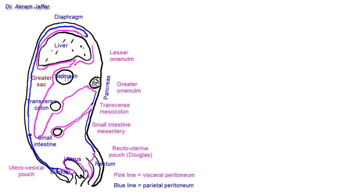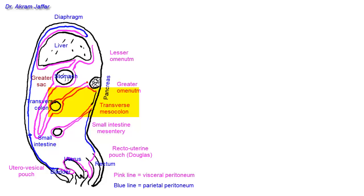The visceral peritoneum covering the liver is reflected onto the lesser curvature of the stomach, creating a double fold with the fold already drawn — this is the lesser omentum. Then on the back of the stomach, returning into the greater curvature of the stomach, this continues as a double fold with the anterior fold of the greater omentum, enclosing the transverse colon.